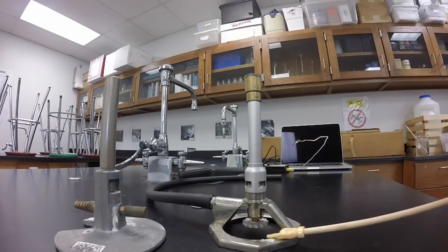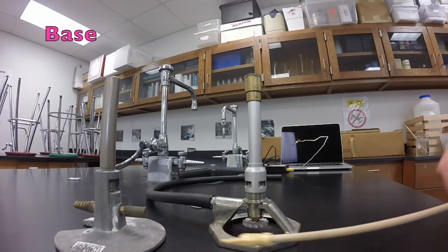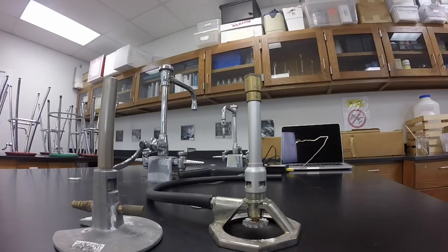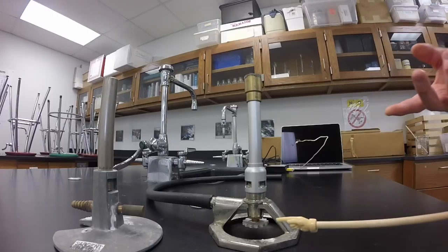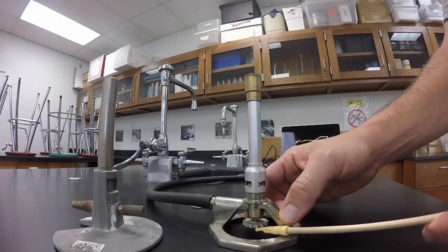You also have a base. The base supports the Bunsen burner. Next to or just above the base, you have a gas needle valve. On many of our Bunsen burners, it's located here. It's a little cog.